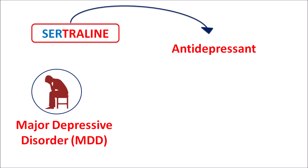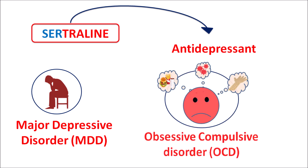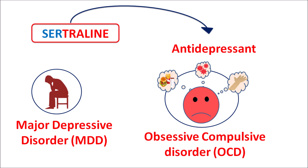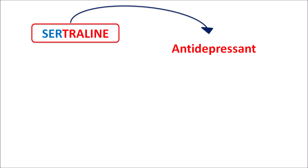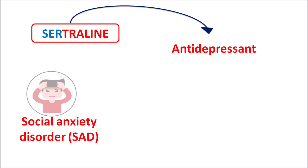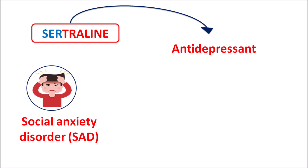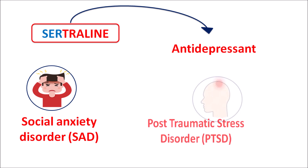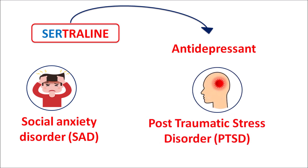Similarly, this drug can also be used for a few anxiety disorders. It can be indicated for obsessive compulsive disorder, where anxiety is generated because of any obsessions or compulsions. This drug is also indicated for the treatment of social anxiety disorder — the anxiety generated due to social interaction — and post-traumatic stress disorder, where recall of past stressful events can produce anxiety.